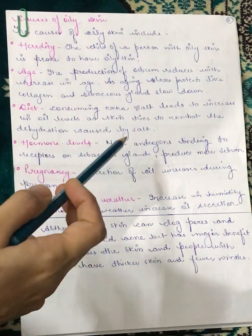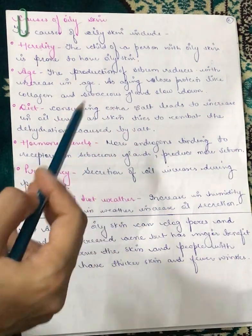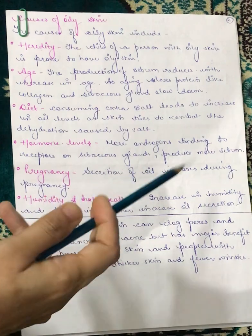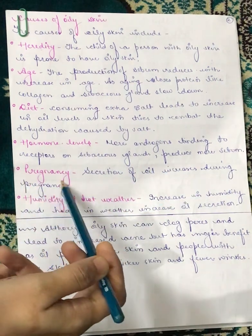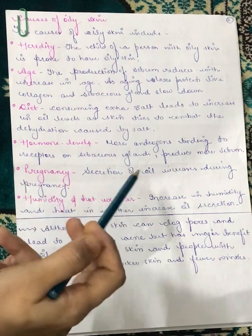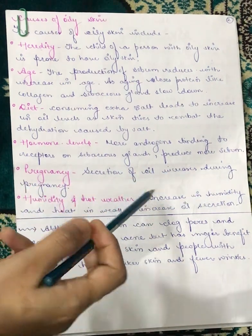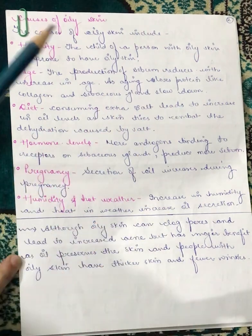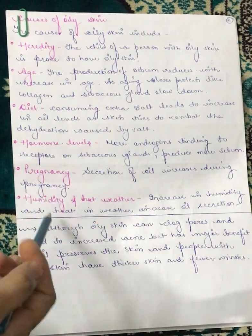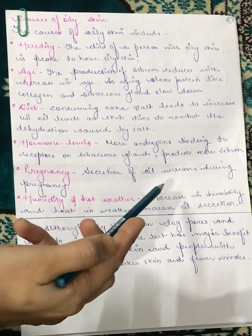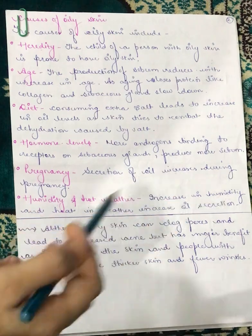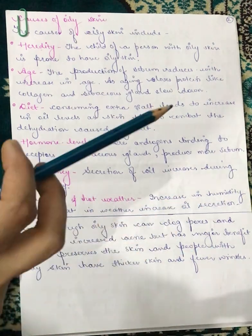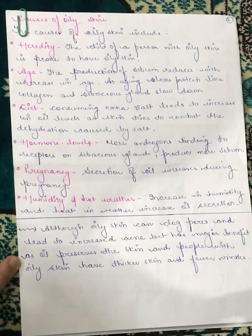Hormone levels are another cause: more androgens binding to receptors on sebaceous glands will produce more sebum. Next is pregnancy — secretion of oil in the skin increases during pregnancy. Finally, humidity and hot weather also increase oil secretion, as the increase in humidity and heat causes the skin to produce more oil.